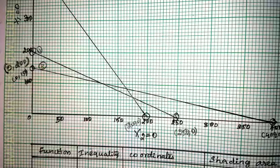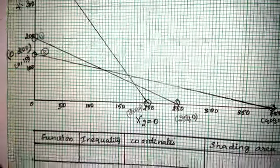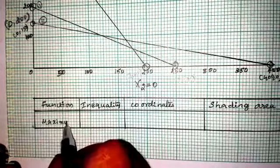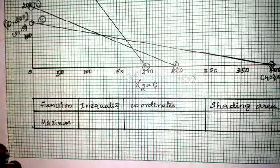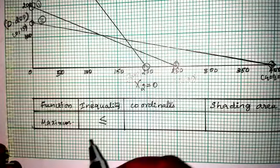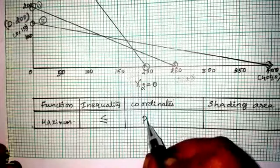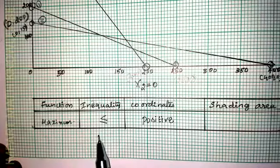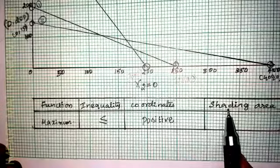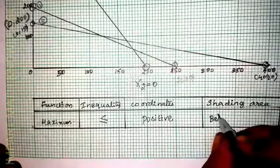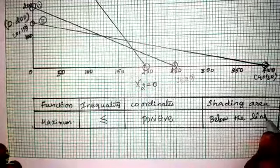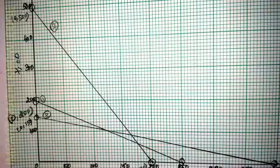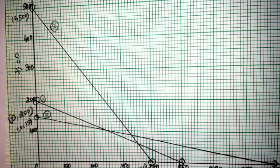After that, identify the feasible region. In this problem the objective function is maximization, the inequality constraints are less than or equal to type, and all coordinates are positive. Since the inequality is less than or equal to type, you have to shade below each line. All the constraints are less than or equal to type, so shade inside the region. I suggest using three different colored pens for shading the region.